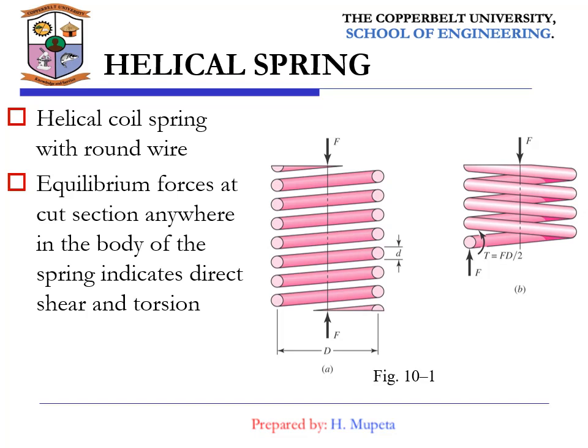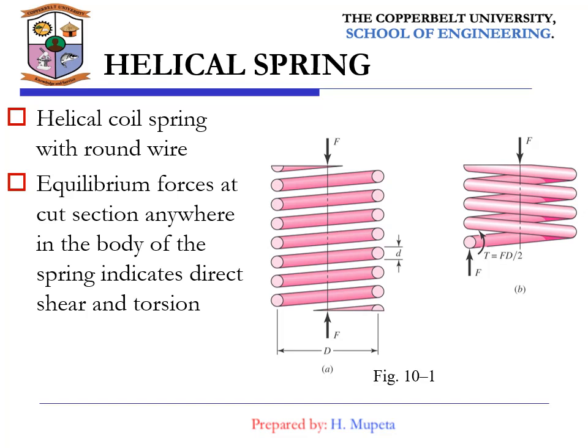Looking at the isolated section A in the spring as shown in figure 10.1B, we can see that for equilibrium the isolated section must contain a direct shear force F and a torsional moment T. At equilibrium, forces at the cut section anywhere in the body of the spring give direct shear and torsional stress, which produce stresses in helical springs.